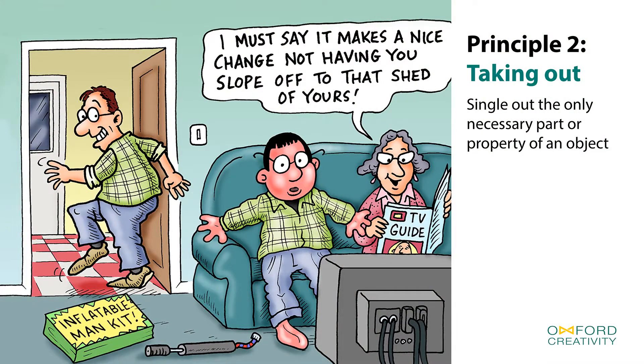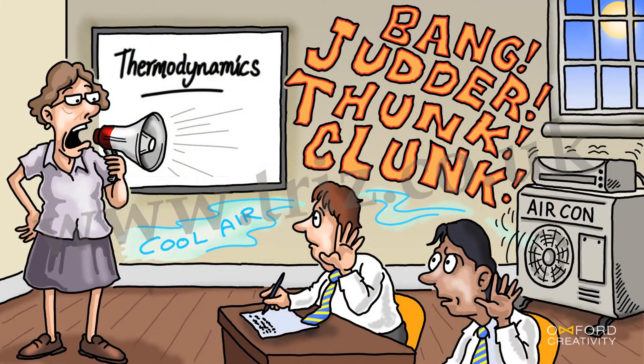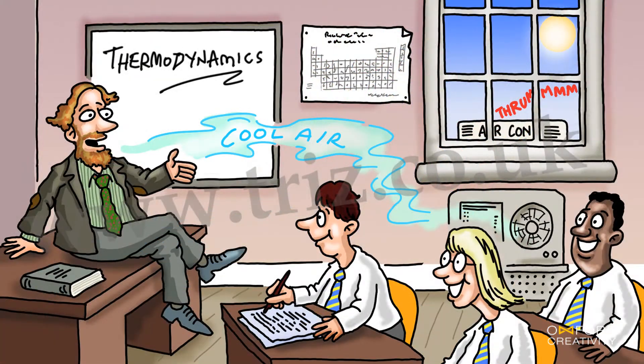Principle number two is called taking out, and that refers to taking out anything harmful but leaving all the good. Many training rooms I go into have fantastic air conditioning, but they also have a huge amount of noise. So the TRIZ principle number two will say: take out the bit you don't want — keep the air conditioning, put the noise outside. It's just separating out the good from the bad. Quite often when we're problem solving, we have to be nudged to the right and very simple solutions to find the very best ways of using resources and separating out the bad things from the good.